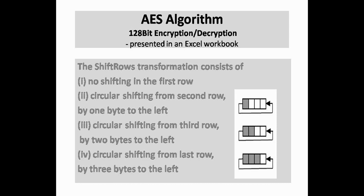Unlike DES, which has 8 S-boxes, in AES we have only one S-box. The ShiftRows transformation consists of: no shifting in the first row; circular shifting of the second row by 1 byte to the left; circular shifting of the third row by 2 bytes to the left; and circular shifting of the last row by 3 bytes to the left.